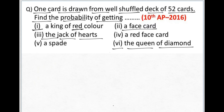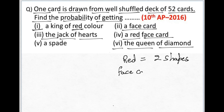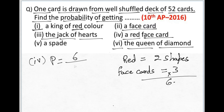Now find the probability of getting a red face card. Red cards come in two shapes, and face cards in each shape are 3. So total number of red face cards is 2 into 3, which is 6. Probability equals 6 divided by 52, and the answer becomes 3 by 26.